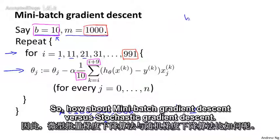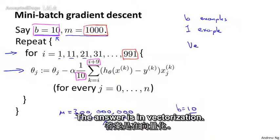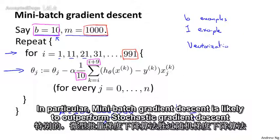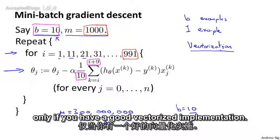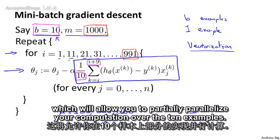So how about mini-batch gradient descent versus stochastic gradient descent? So why do we want to look at b examples at a time rather than look at just a single example at a time as in stochastic gradient descent? The answer is in vectorization. In particular, mini-batch gradient descent is likely to outperform stochastic gradient descent only if you have a good vectorized implementation. In that case, the sum over 10 examples can be performed in a more vectorized way which will allow you to partially parallelize your computation over the 10 examples.